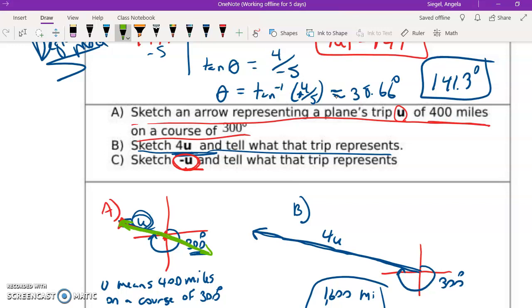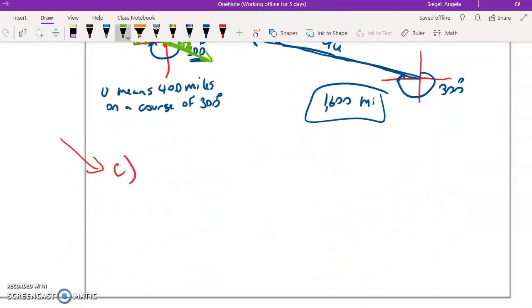So let's think about what that means as far as direction. So 300 degrees, this is going to be a 30 degree reference angle. So the negative U, that's going to be 90 plus 30, which is 120 degrees. So I know it's going to be 120 degrees. I know that the length or the magnitude is going to be the same. So this is going to be representative of negative U. This means 400 miles on a course of 120 degrees, and that will give us that direction.